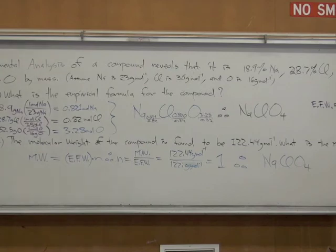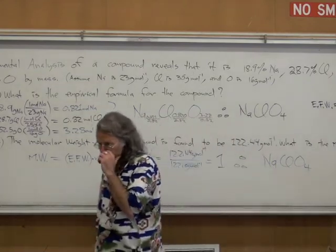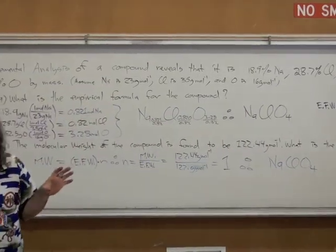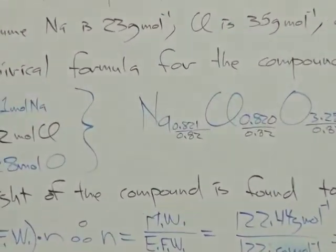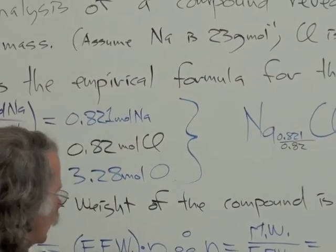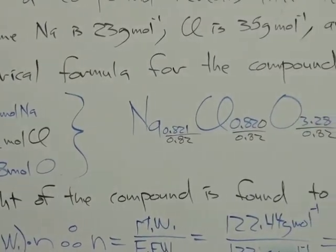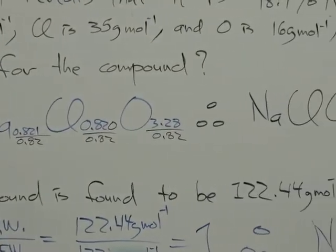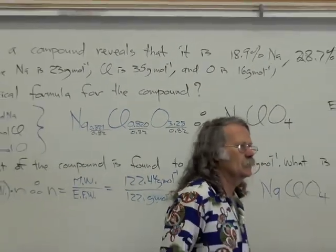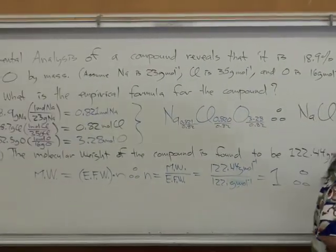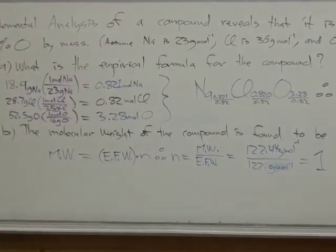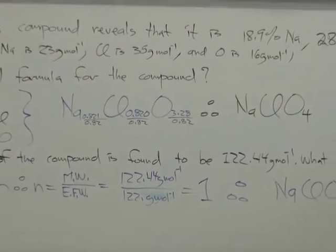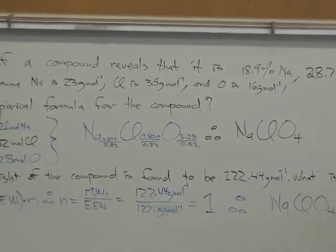Are there any questions about this particular problem? Guaranteed it's on the test. Not this problem, but something like it. Any questions? So if it wasn't one, you'd go back to the EFW at the times of five. Yeah. Whatever n turned out to be. Let's say it was two. Then the formula would have been Na2, Cl2, O8. You multiply it by each of the subscripts. Does that make sense? Everybody clear on that? That's a good question. Any other questions?